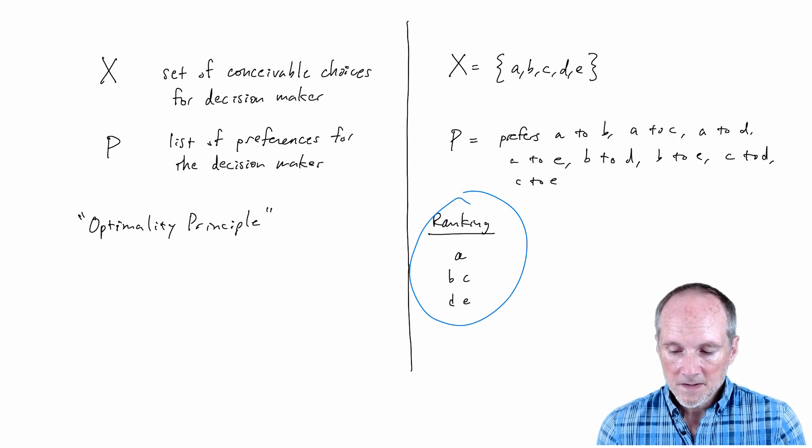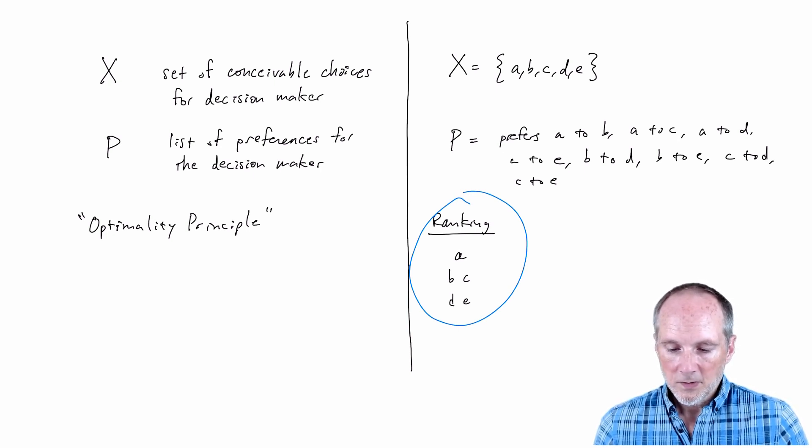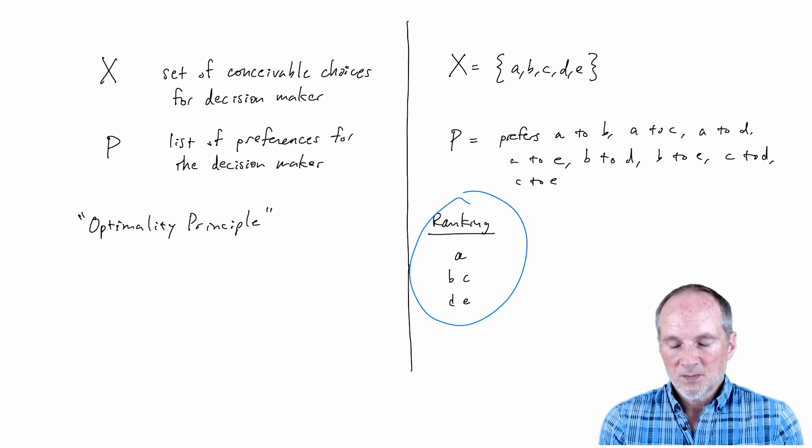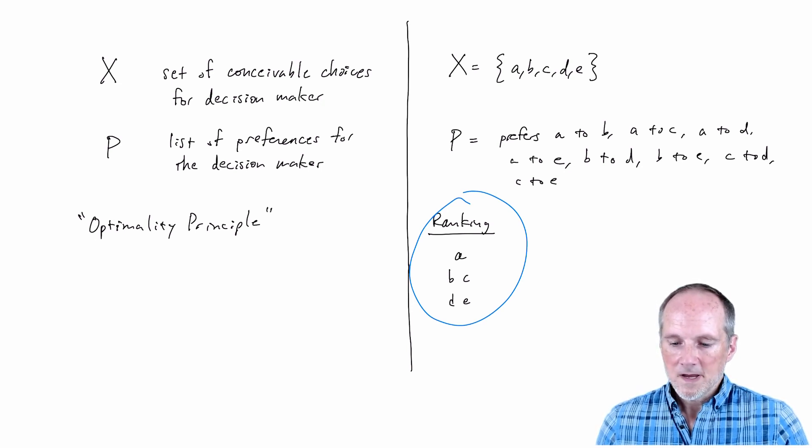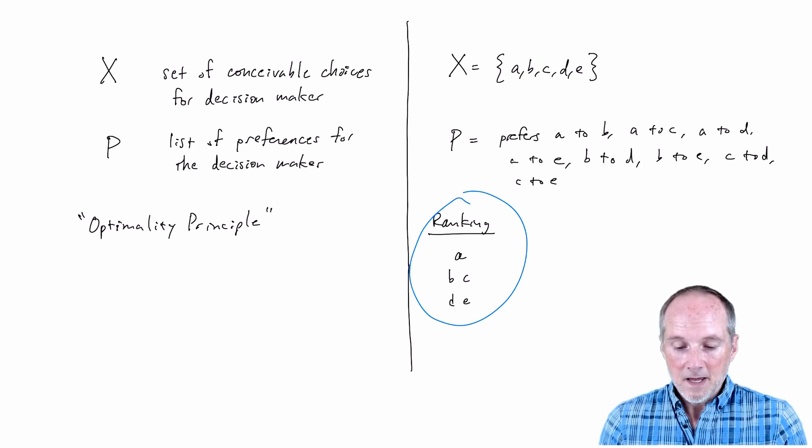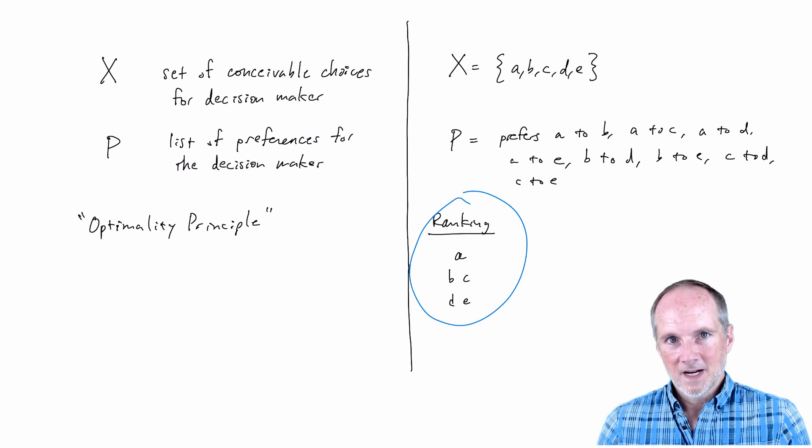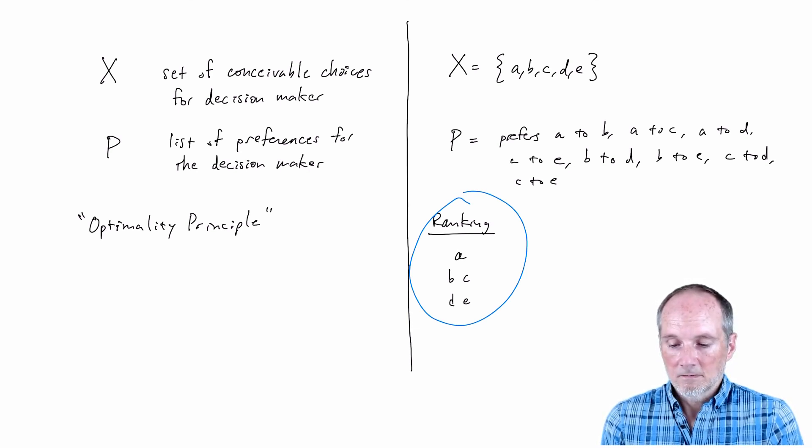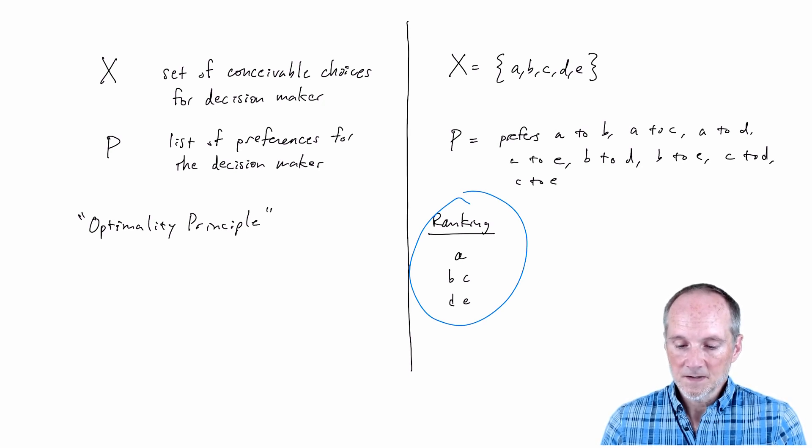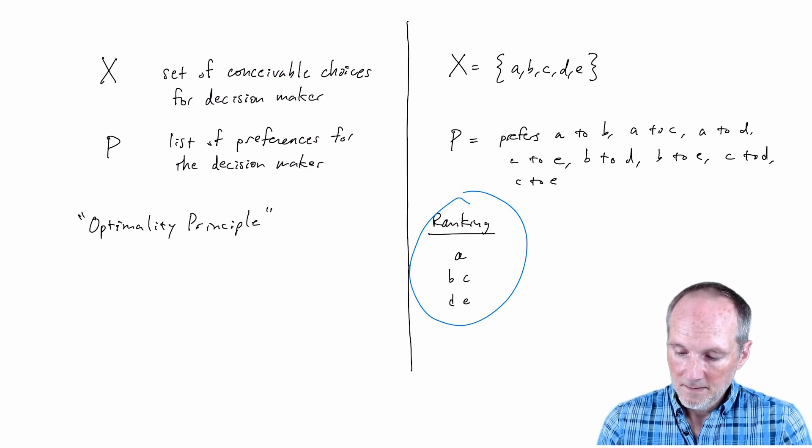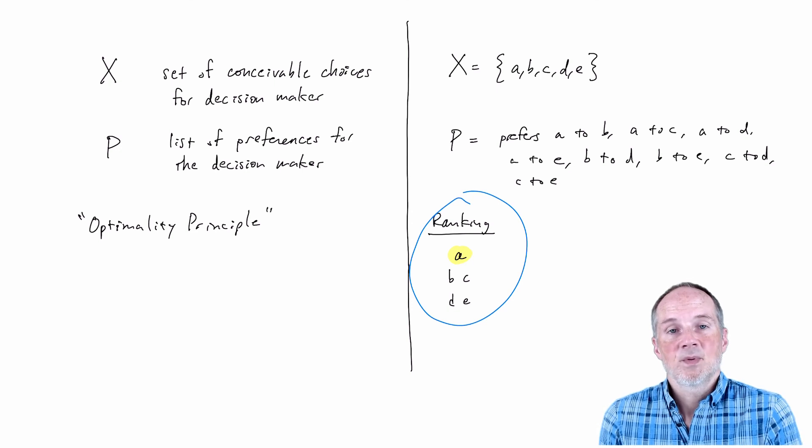But the way I think about it is so if this was a car our set of conceivable choices our list of preferences that's like the body of the car the trunk the tires the gas tank. The optimality principle is the ignition system that actually makes it go and it gives us a prediction. Specifically let's suppose the decision maker can choose anything from these conceivable choices. The optimality principle then is going to say well they choose the best thing they can, that is a prediction that comes out of the model.